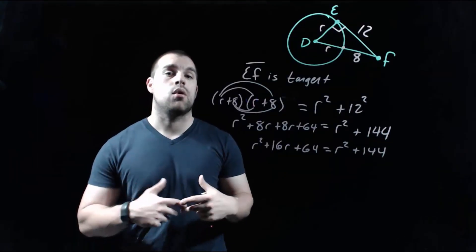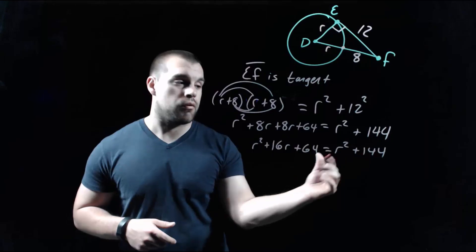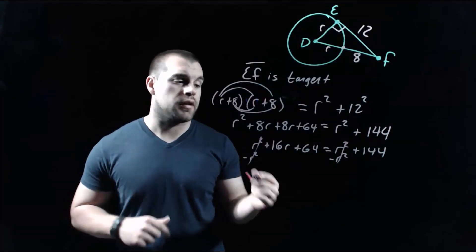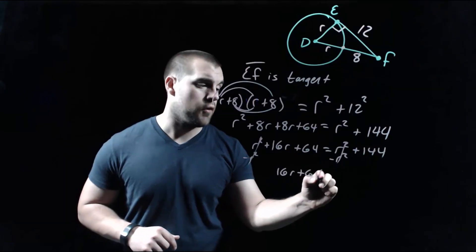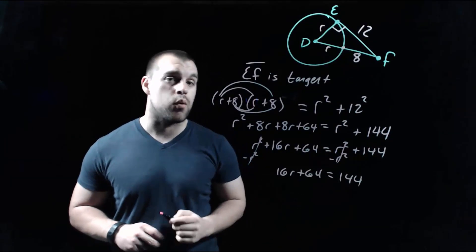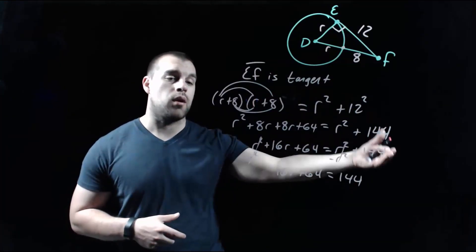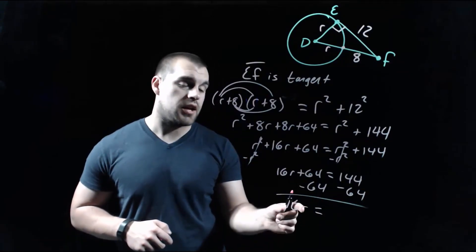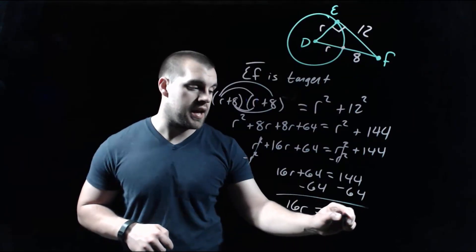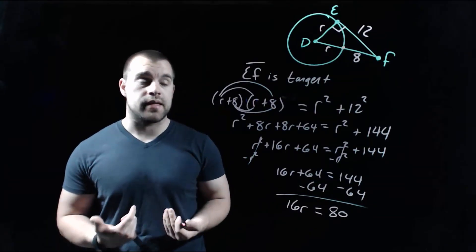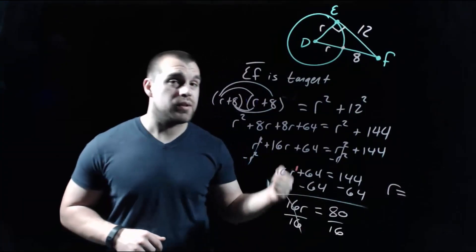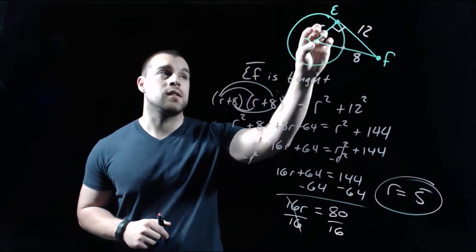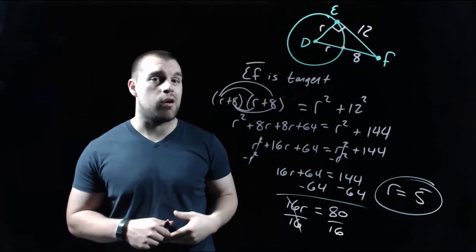We want variables on the same side, so subtract R² from both sides — the R² terms cancel. Now we have 16R + 64 = 144. Subtracting 64 from the right-hand side gives 16R = 80. Dividing by 16, we get R = 5. That's our answer — the length of the radius is 5.